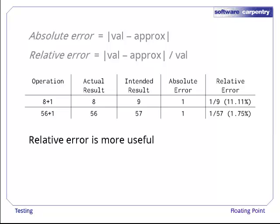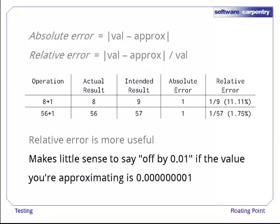When we're thinking about floating point numbers, relative error is almost always more useful than absolute. After all, it makes little sense to say that we're off by a hundredth when the value in question is a billionth.